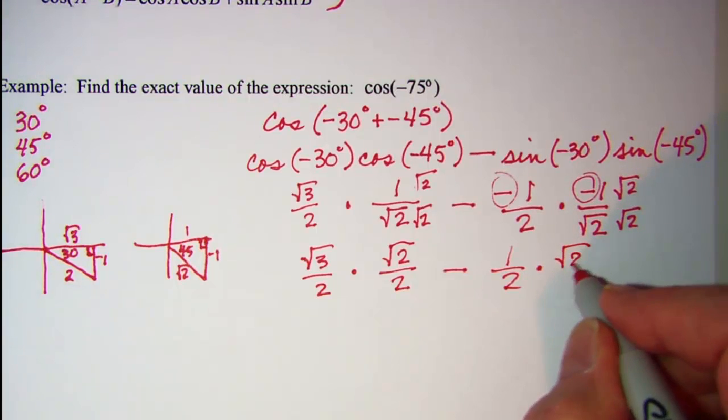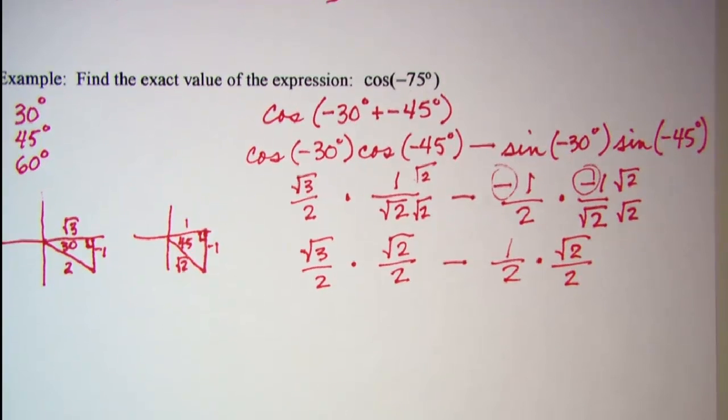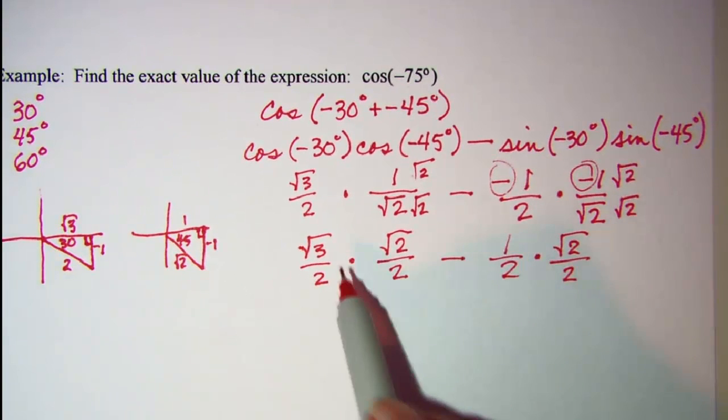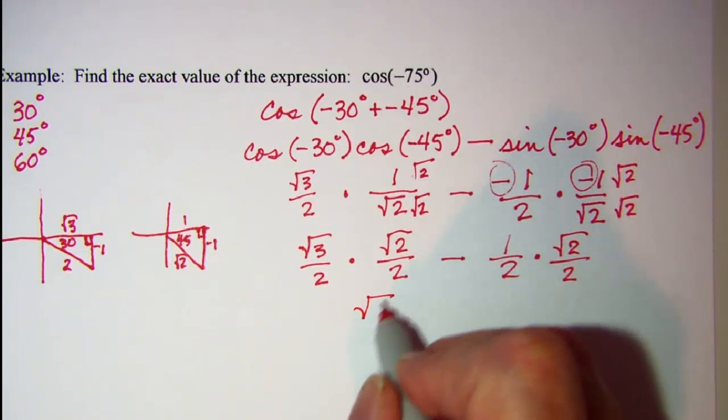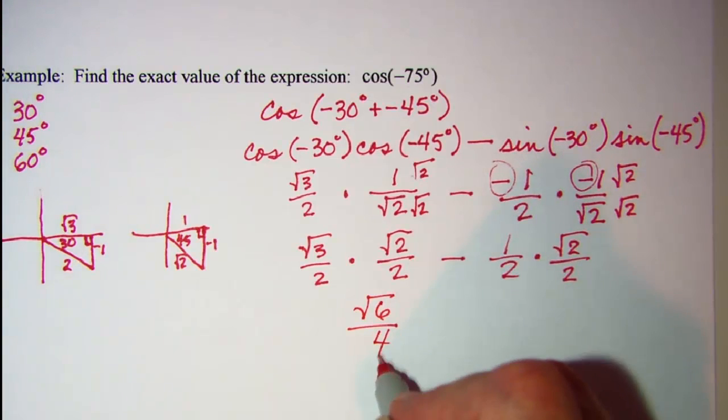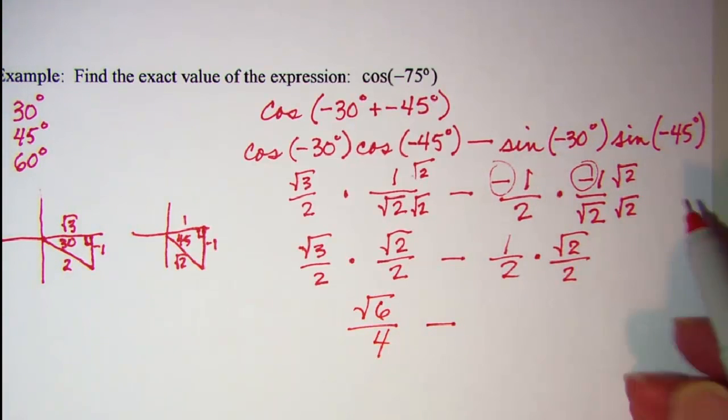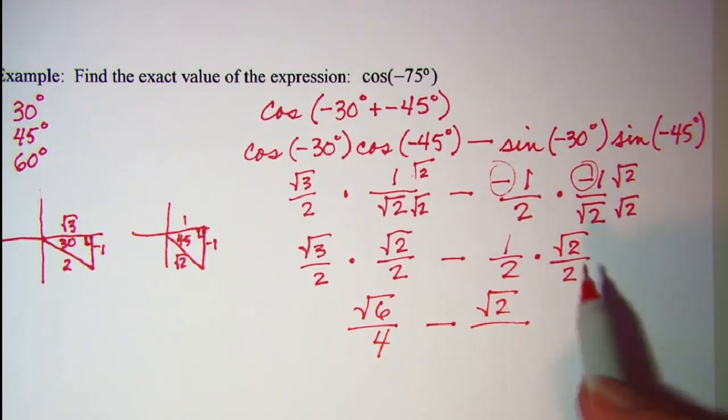And now let's do the multiplication, so square root 3 times square root 2 is square root 6, 2 times 2 is 4, subtract, and then 1 root 2 over 2 times 2 is 4.